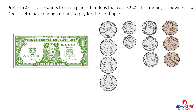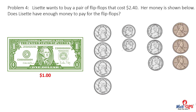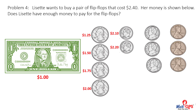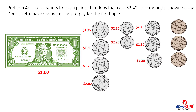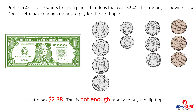Problem four. Lisette wants to buy a pair of flip-flops that cost two dollars and forty cents. Her money is shown below. Does Lisette have enough money to pay for the flip-flops? Count with me: one dollar, one twenty-five, one fifty, one seventy-five, two dollars, two ten, two twenty, two twenty-five, two thirty, two thirty-five, two thirty-six, two thirty-seven, two thirty-eight. Lisette has two dollars and thirty-eight cents. That is not enough money to buy the flip-flops.